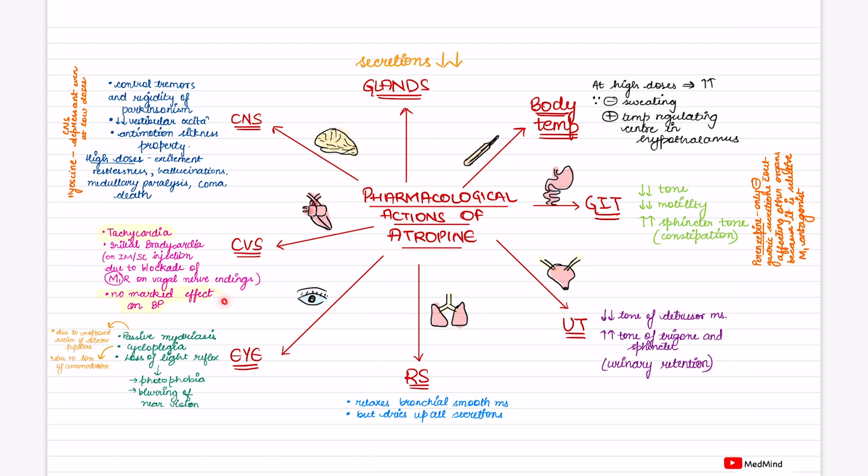In the eye, it causes passive mydriasis, cycloplegia, and loss of light reflex, which causes photophobia and blurring of near vision. In the respiratory system, it causes bronchial smooth muscle relaxation but causes all secretions to dry up.